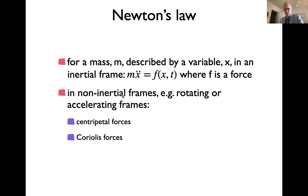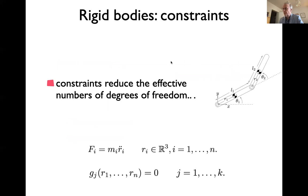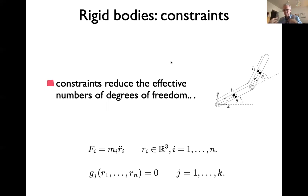These are apparent forces in the sense that they show up when you describe motion in a non-inertial frame. If you transform the mathematical description into an inertial frame, they go away. In robots, we're not talking about free point masses as learned in high school — we're talking about rigid bodies: pieces of matter that are not deformable.